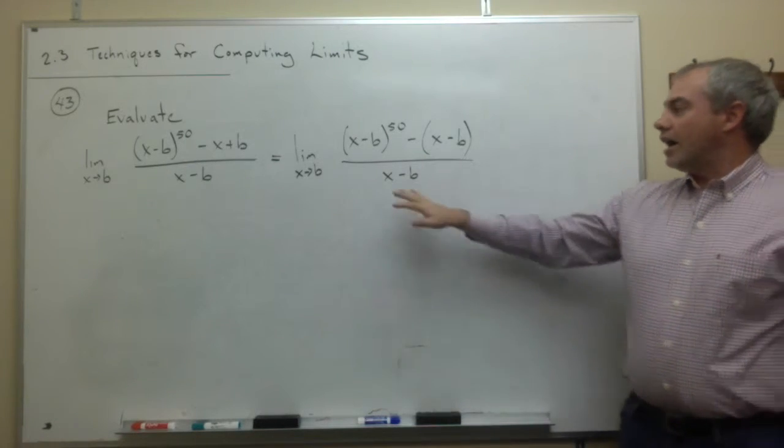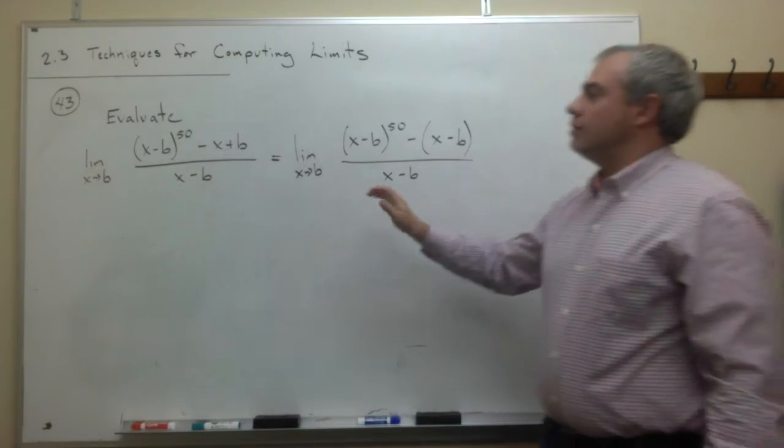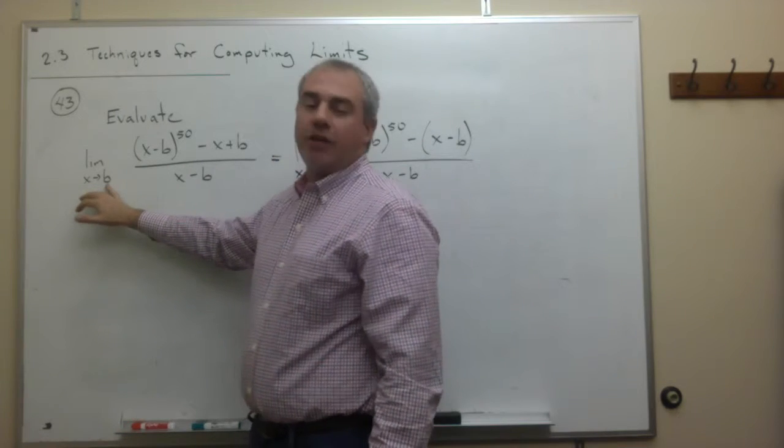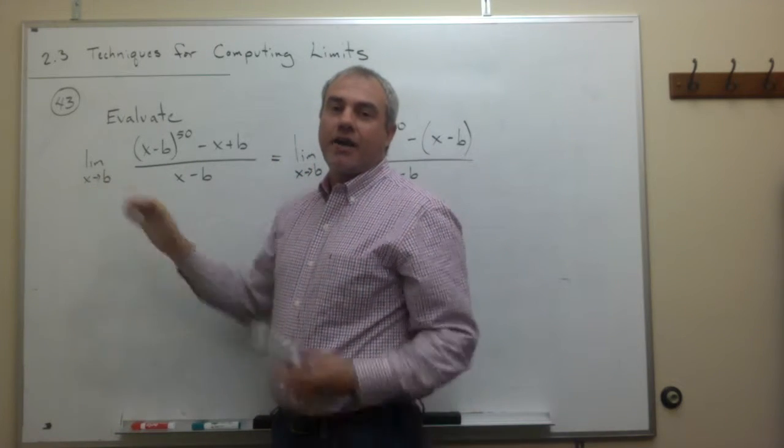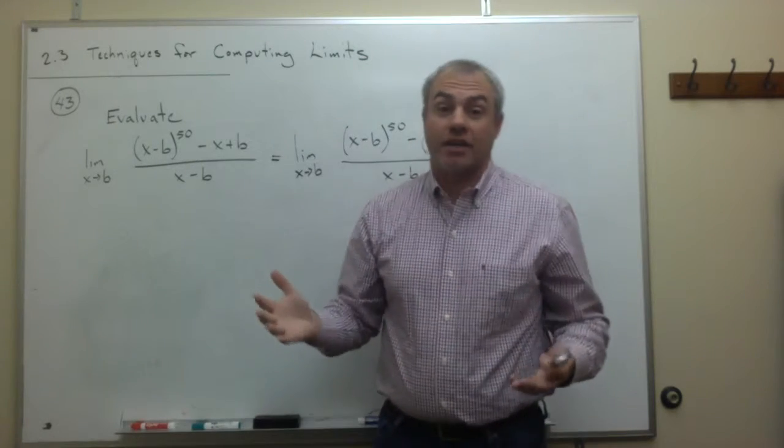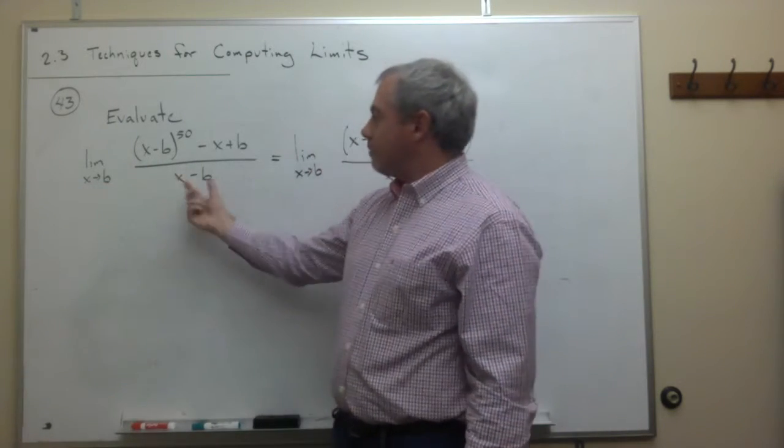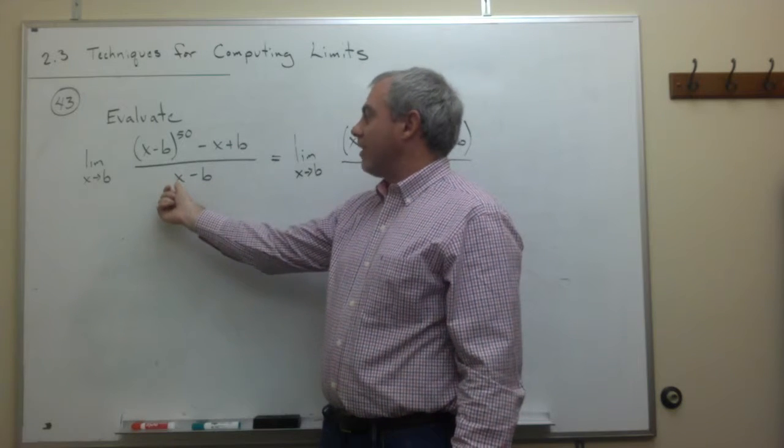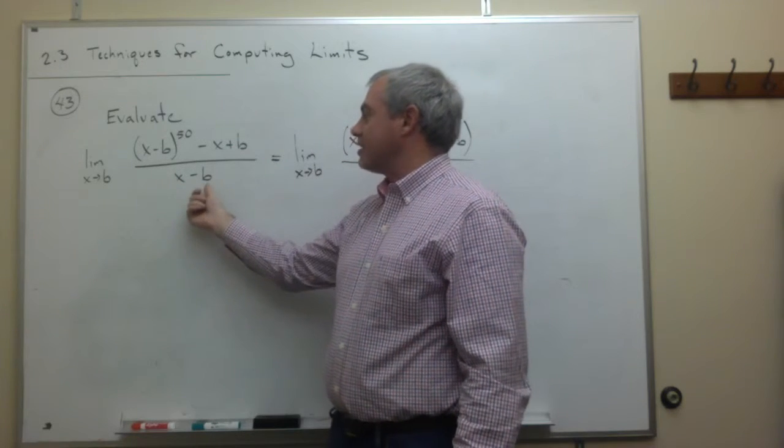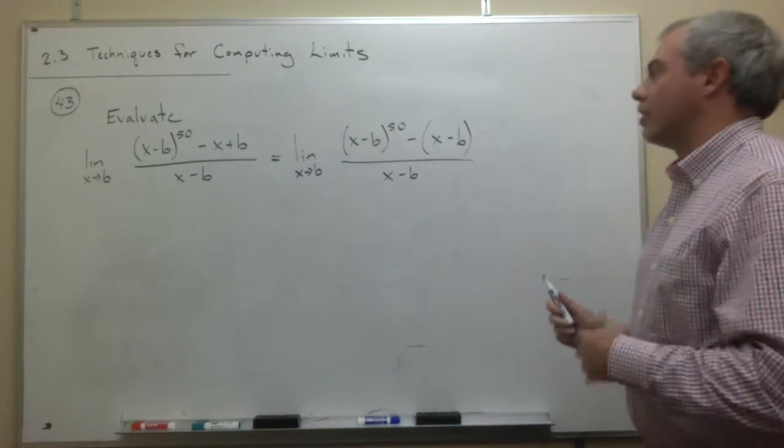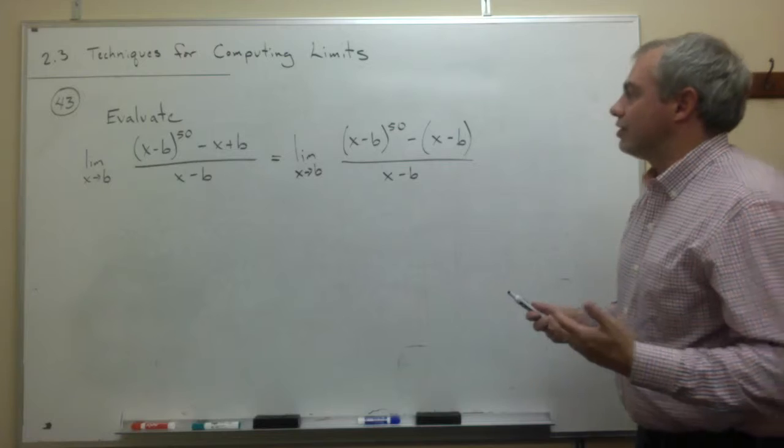Now, at the very beginning here, I know that I can't just plug in b. That would be the nicest thing that could happen, but it's pretty clear that if I plug in b for x, I get b minus b, which is 0, division by 0. So I need to do something else. What is it that I can do?